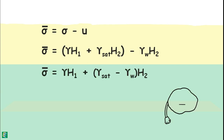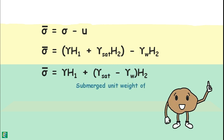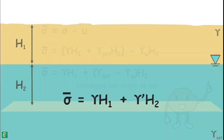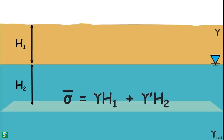By writing and rearranging the corresponding values, this quantity is called the submerged unit weight of soil. So this is the expression for the effective stress on this plane in the soil.